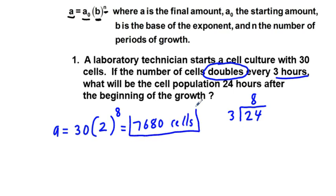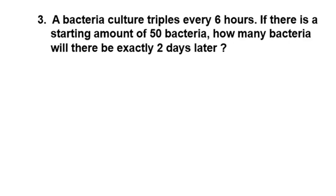So that's our answer to problem one. Now on to our next problem, which is three. A bacterial culture triples every six hours. If there is a starting amount of 50 bacteria, how many bacteria will there be exactly two days later? Much the same as problem one, we have a, the final amount, is equal to our initial amount which is 50 bacteria times we have our base. Our base is the keyword here, triples, so that's 3 to the power of n.